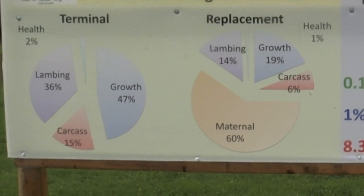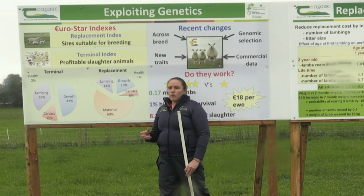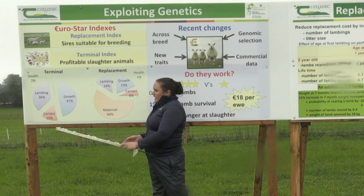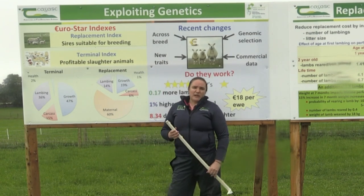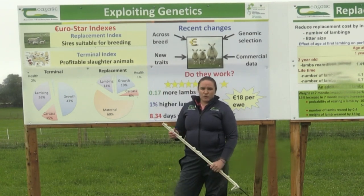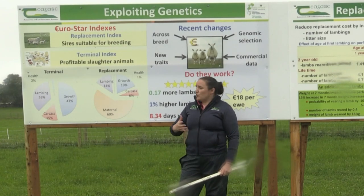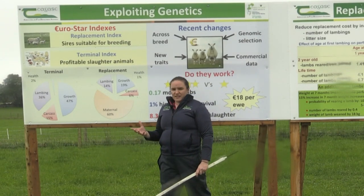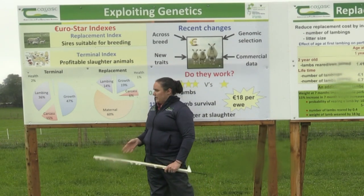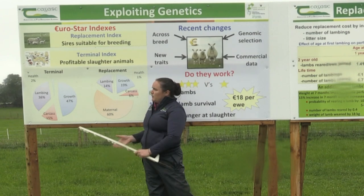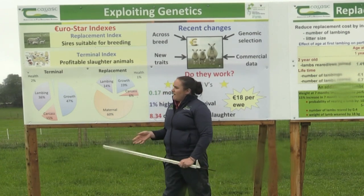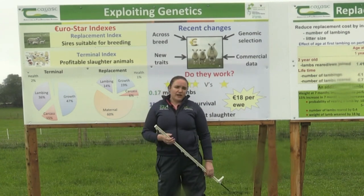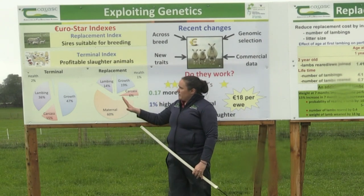We want to buy rams that give us live lambs with very little lambing difficulty. Carcass has a higher weighting in the terminal index than in the replacement index — because we want to produce good finished goods in terms of carcass fat, carcass conformation, and lamb grading — at about 15%. Health is also included in the terminal index. That's the makeup of the indexes as they currently stand.